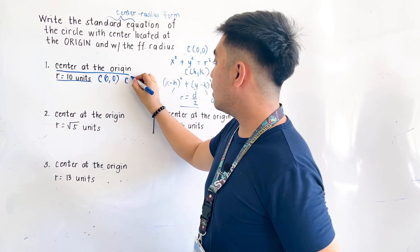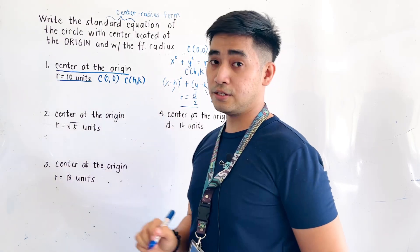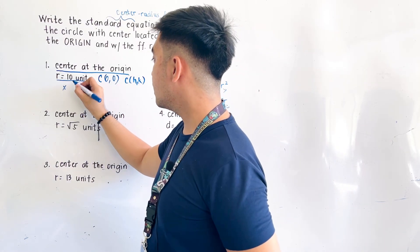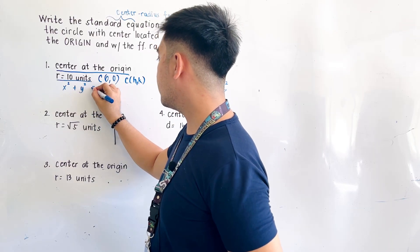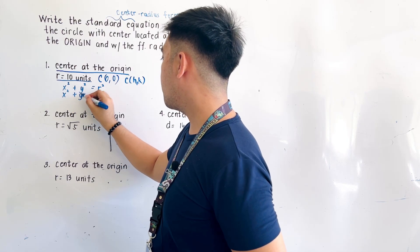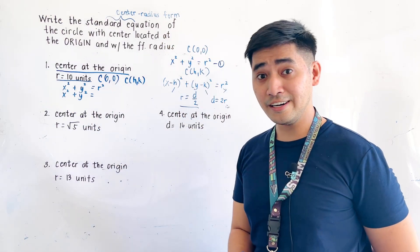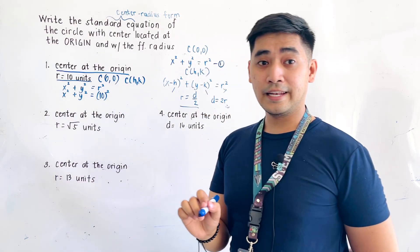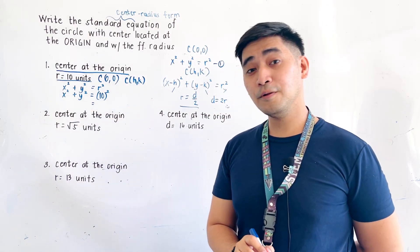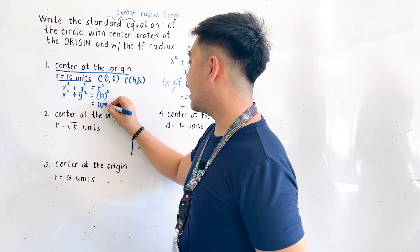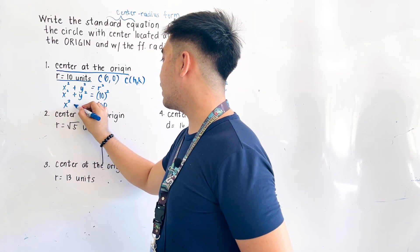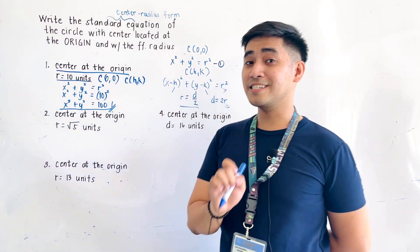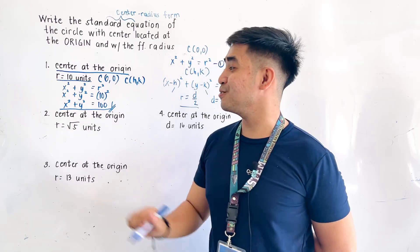We square 10, and 10 squared is 100. Therefore, the equation of the circle with center at the origin and radius equal to 10 is x squared plus y squared is equal to 100.